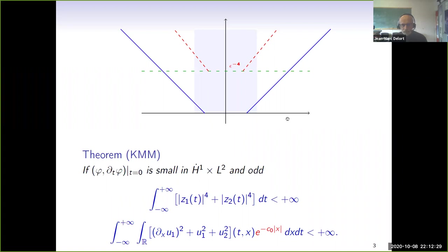It turns out that we shall be able to do that, not for all times, but only up to time epsilon to the minus four, where epsilon is the size of the Cauchy data. As I shall explain later, we expect that past this time, new phenomena will happen along two red dotted lines, so that we do not expect the same type of estimates to be true without modification past this time.